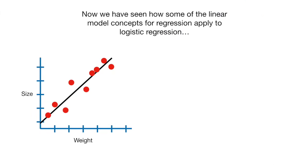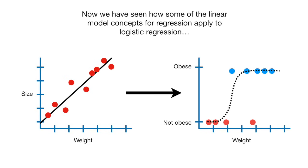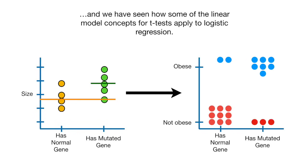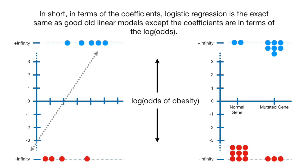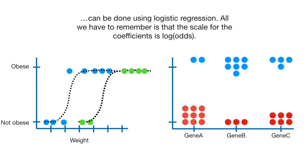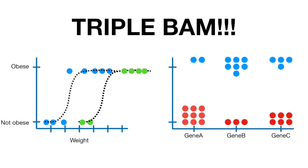Now we have seen how linear model concepts for regression apply to logistic regression, and how linear model concepts for t-tests apply to logistic regression. In short, in terms of the coefficients, logistic regression is the exact same as linear models, except the coefficients are in terms of the log odds. This means that all those fancy things we can do with linear models — like multiple regression and ANOVA — can be done using logistic regression. All we have to remember is that the scale for the coefficients is log odds. Triple bam!